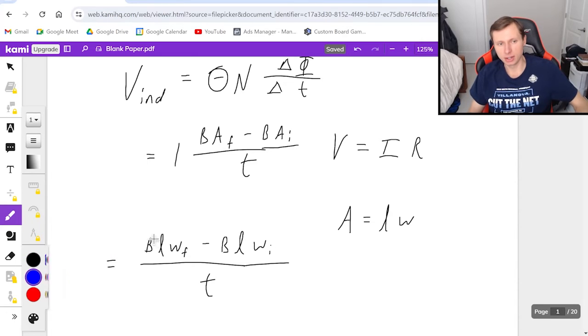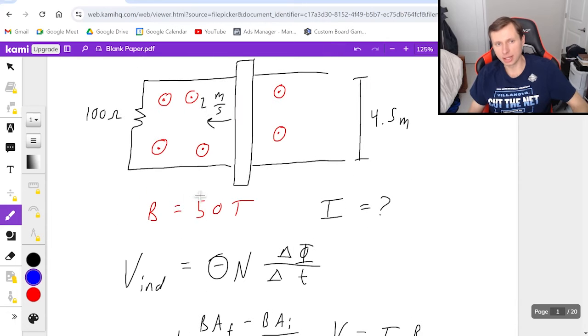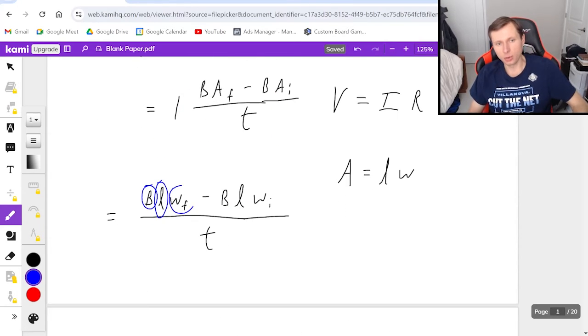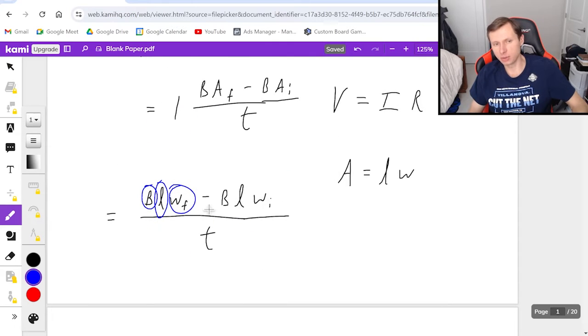Now if I think about what I know here, I know my magnetic field, it's 50. I don't know the length because that would be this length right here, which I don't have. I know the width, we said it was 4.5 meters.